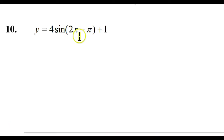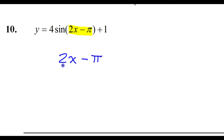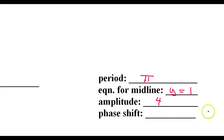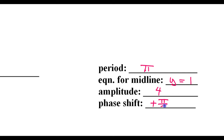Time for the phase shift. The phase shift is not π because the 2 is messing it up for us. We take 2x − π and factor out the 2, putting it outside the parentheses. Dividing everything inside by 2: the 2x becomes x, and −π becomes −π/2. So −π/2 is what's inside, but the phase shift is the opposite. We write positive π/2 for the phase shift, because we are going to the right by π/2.